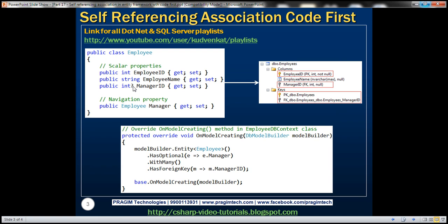Based on this Employee class, we want Entity Framework to generate the Employees table. The columns in this table are EmployeeID, EmployeeName, and ManagerID. EmployeeID is the primary key column and ManagerID is the foreign key column. To get the manager of a given employee, we take the ManagerID column value and look it up in the EmployeeID column of the same table. This is a self-referencing employees table, and we want Entity Framework to generate it based on this Employee class.